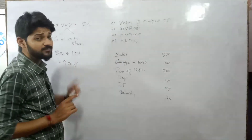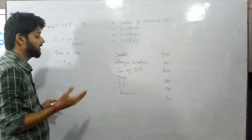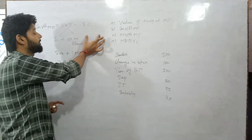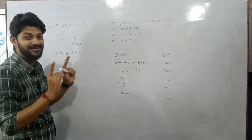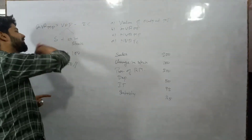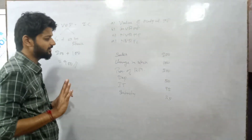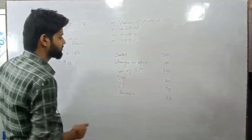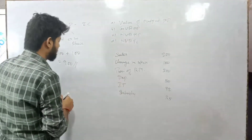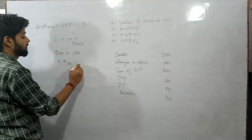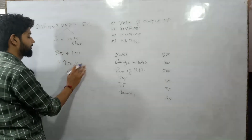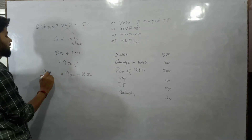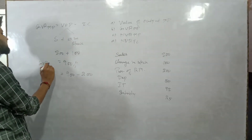Next, Gross Value Added at Market Price: starting from 900, we deduct Intermediate Consumption (IC — not indifference curve, but intermediate consumption) to get GVA at MP. Purchase of raw material is 200, which is an intermediate consumption. So 900 minus 200 equals 700 — that is the Gross Value Added at Market Price.